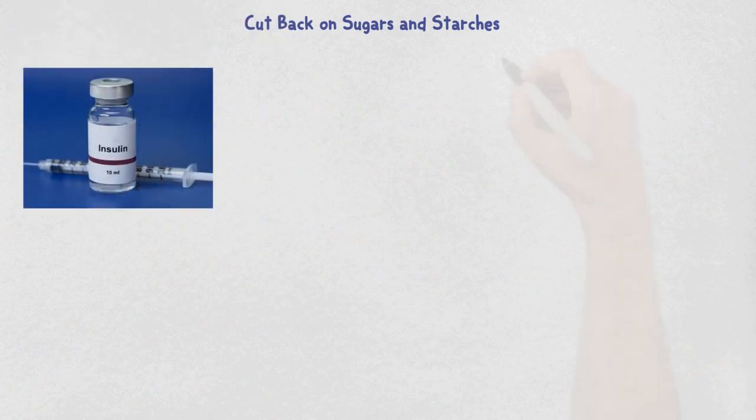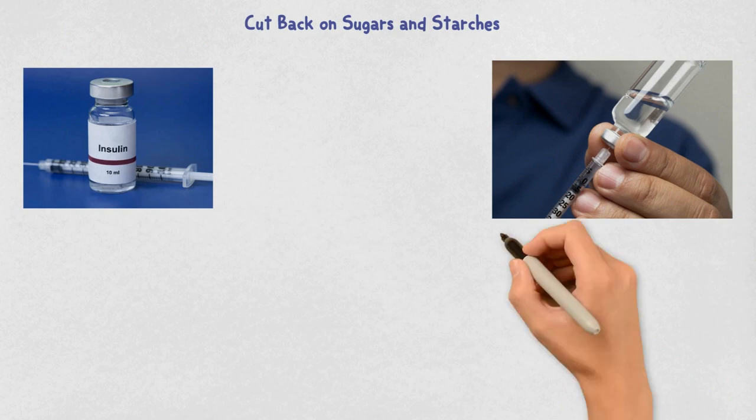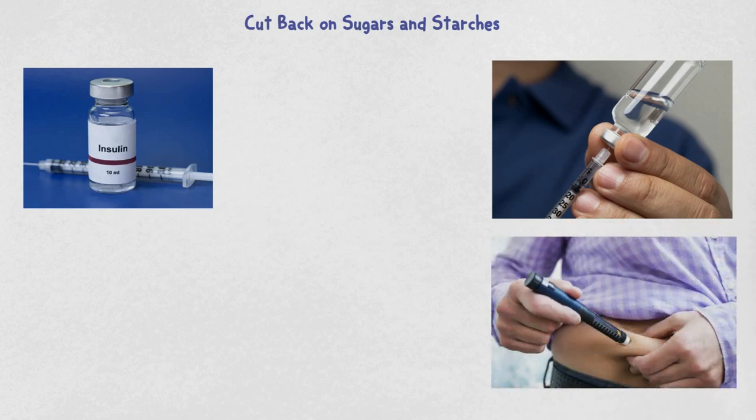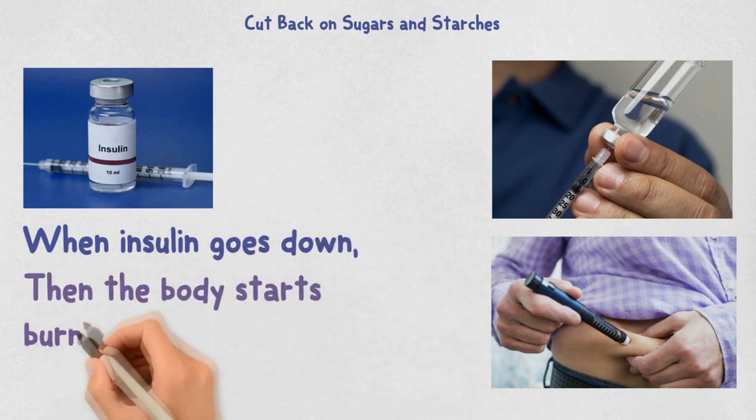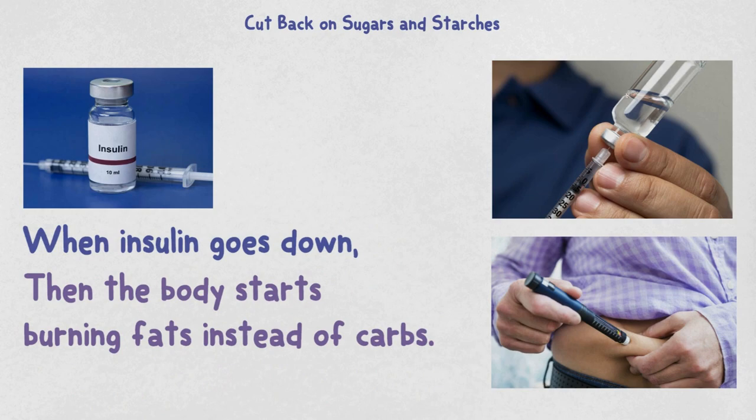When insulin goes down, fat has an easier time getting out of the fat stores and the body starts burning fats instead of carbs. Another benefit of lowering insulin is that your kidneys shed excess sodium and water out of your body, which reduces bloat and unnecessary water weight.